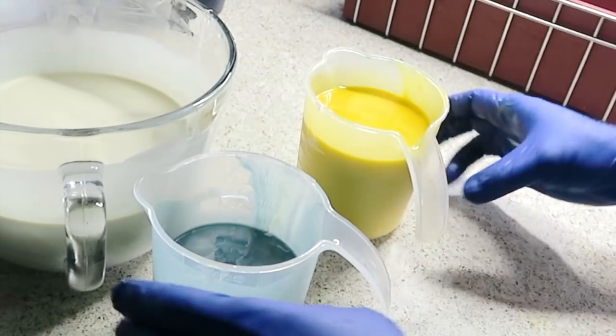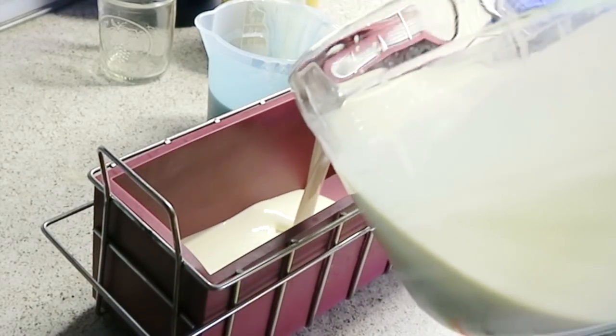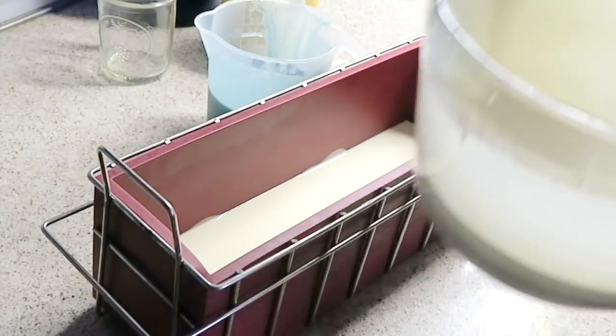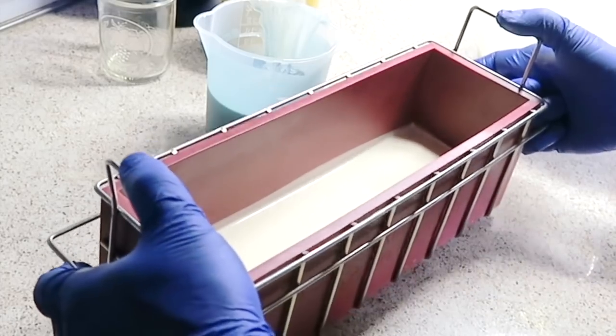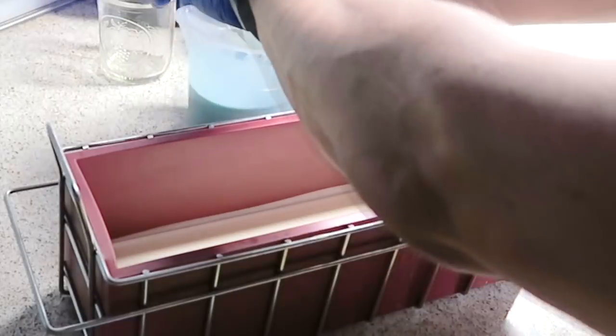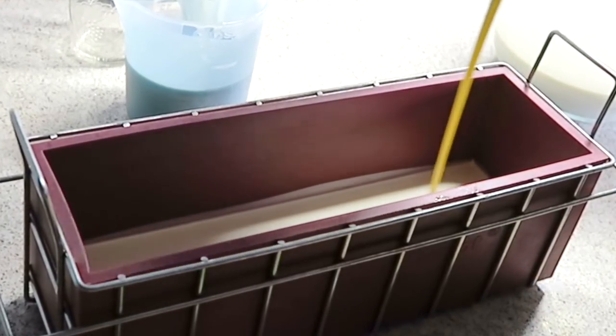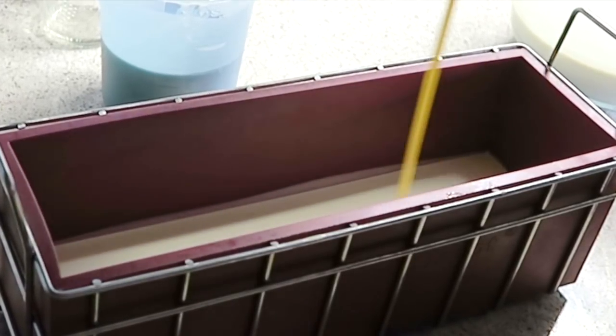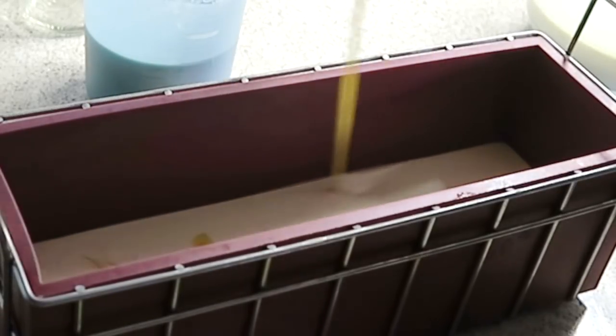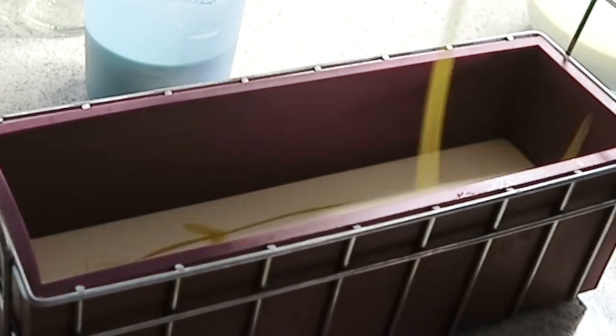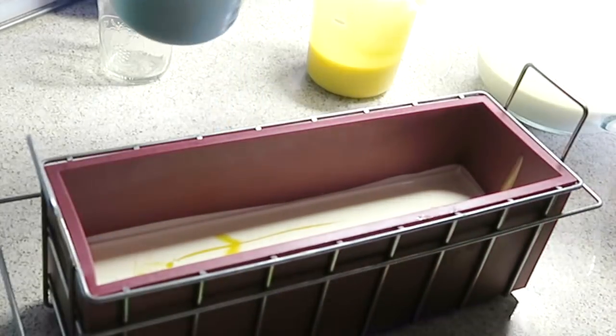Okay, so I think all I want are alternating drop swirls. Let's pour about half of this white in there. Let's start with the yellow. Let's pour about half of this in there. Here we go. Followed by the blue.